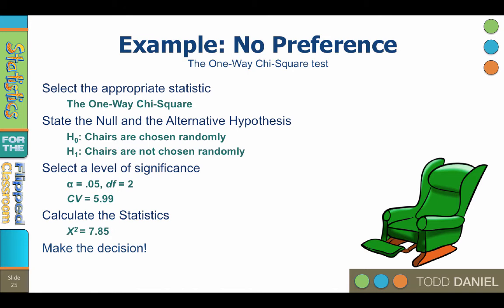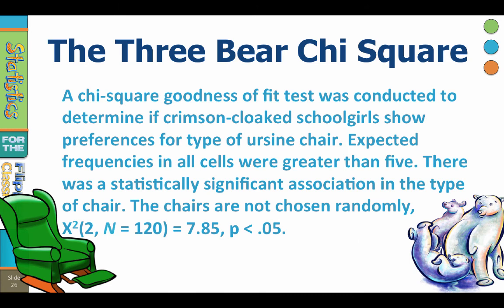Step five, make the decision. Compare the chi-square value of 7.85 to the critical value, 5.99. Since the chi-square value exceeds, it is further from zero, than the critical value, the results are statistically significant. Reject the null hypothesis that says that the chairs are chosen randomly. The chairs are not chosen randomly. Chi-square with two degrees of freedom, n of 120 equals 7.85, probability less than 0.05.